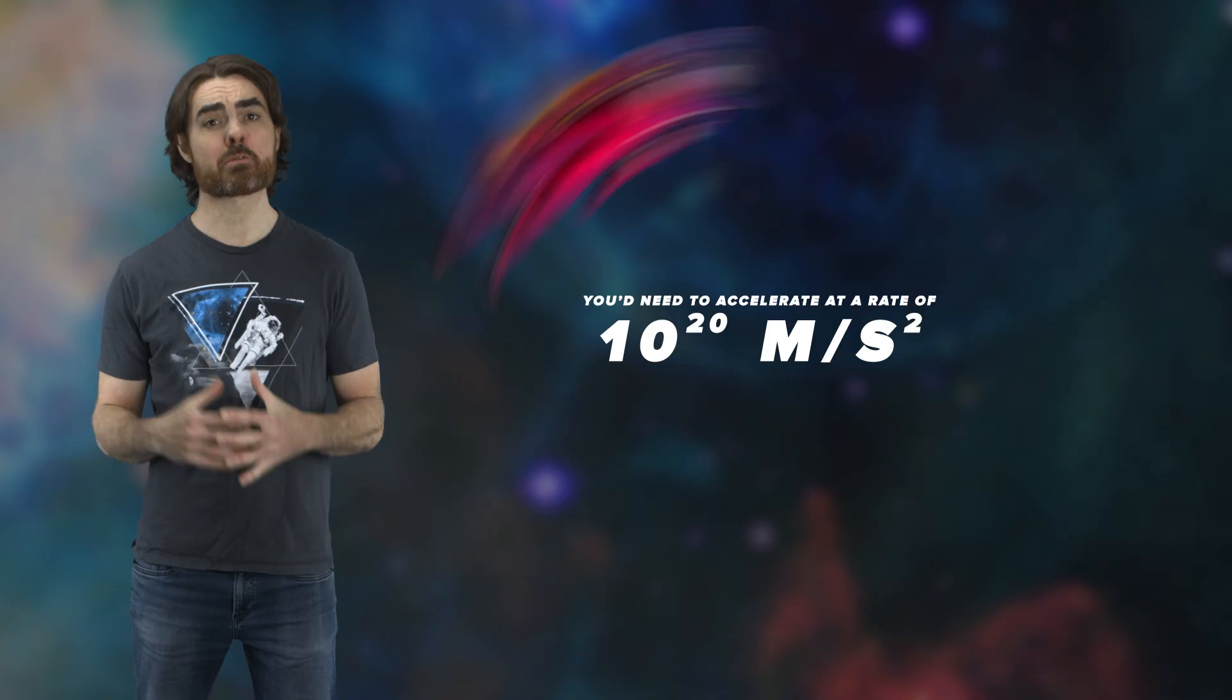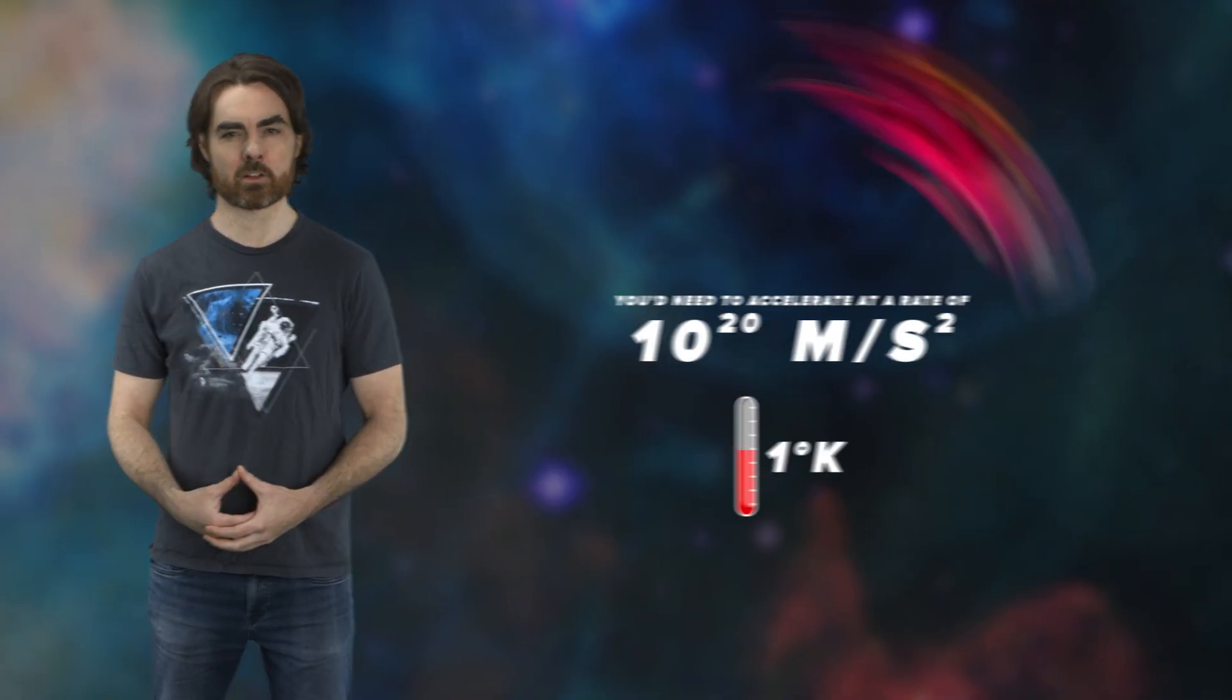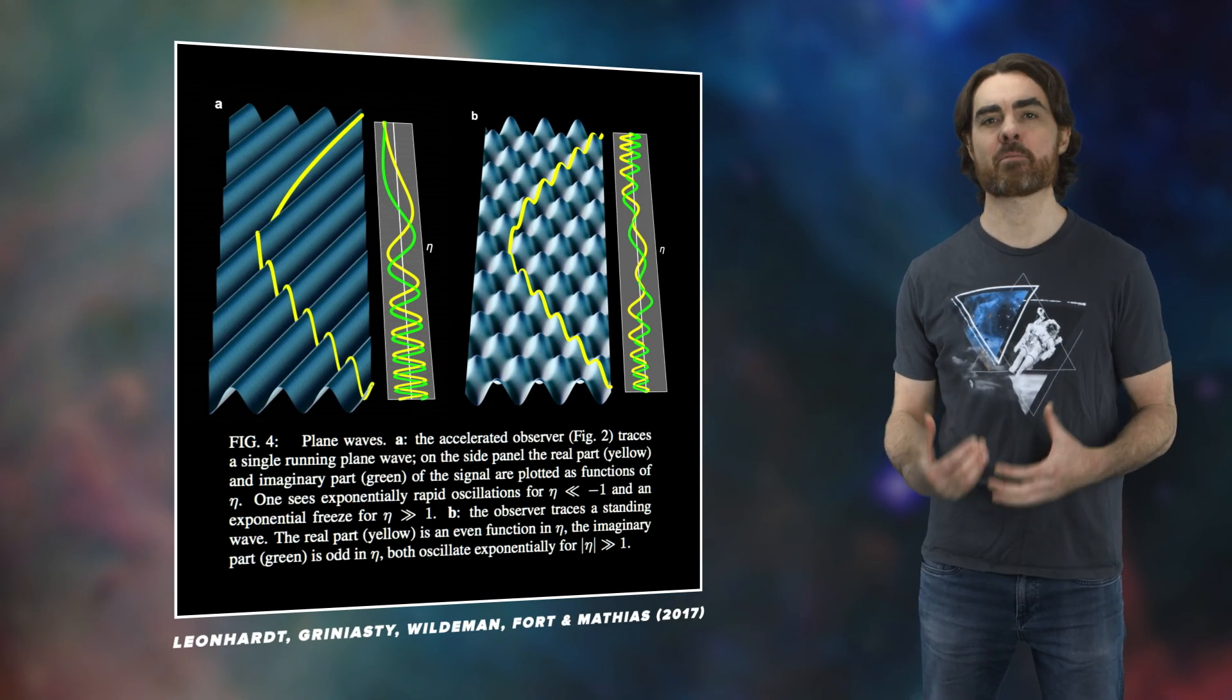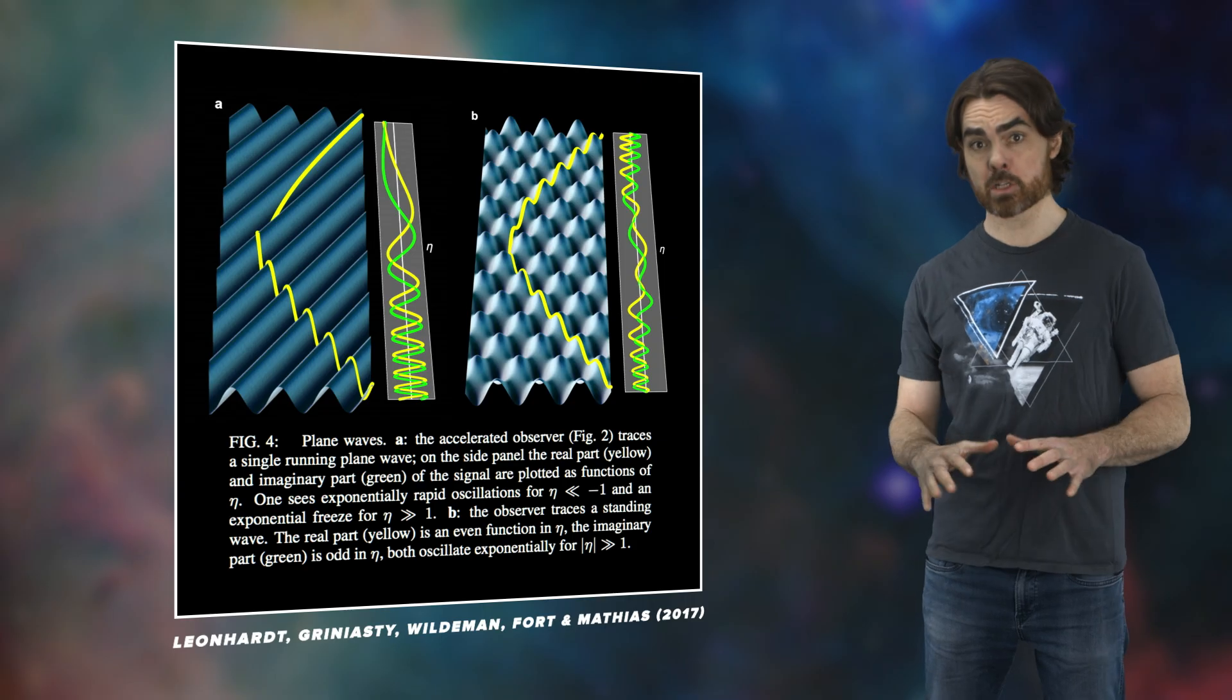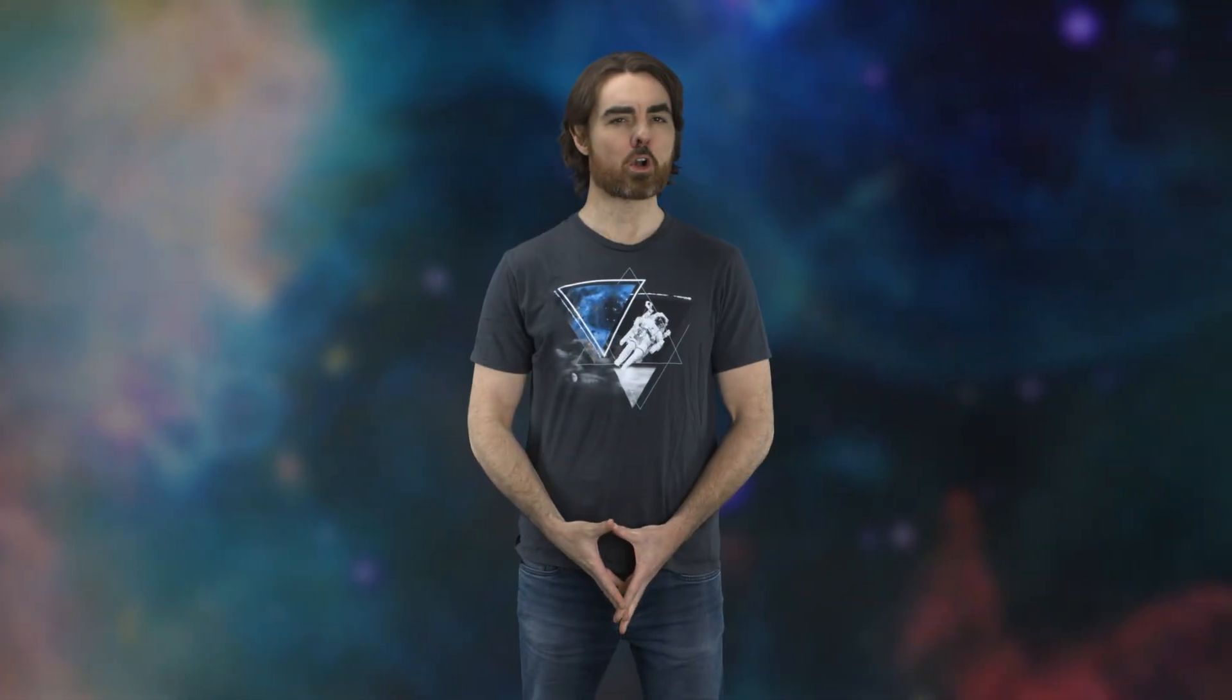So how strong is Unruh radiation? Well, don't worry too much. You need to accelerate at a rate of 10 to the power of 20 meters per second squared to increase the temperature by a single degree Kelvin. It's difficult to directly observe Unruh particles, although analogies have been observed, even in classical systems like this really cool study with water waves. One more thing. According to Einstein's equivalence principle, remaining stationary in a gravitational field is equivalent to acceleration in free space. That means you, right now, are bathed in a very tiny amount of Unruh radiation.